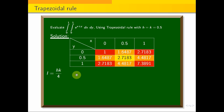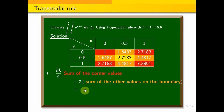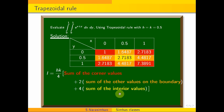The trapezoidal rule formula is: hk/4 into [sum of the corner values, plus 2 into sum of the other boundary values, plus 4 into sum of the interior values]. I denote the corner values in red color and the boundary values in color cells.